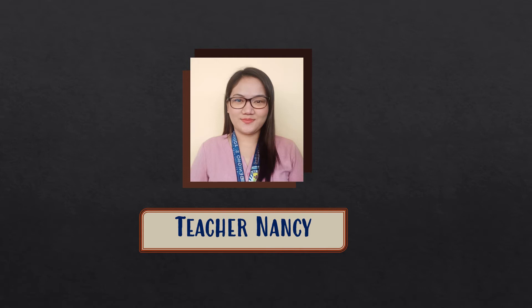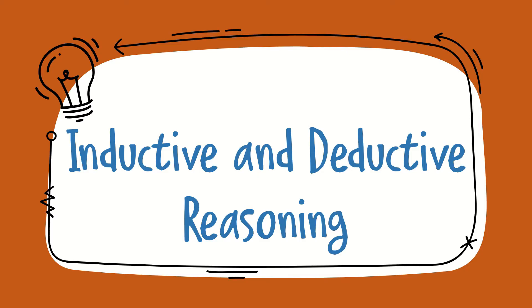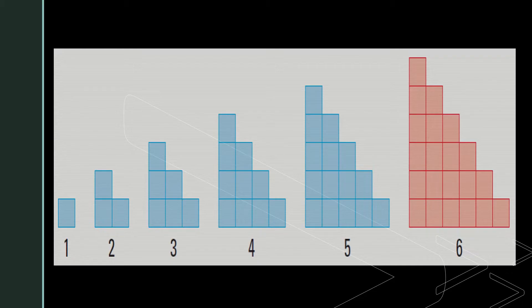Please be reminded that you may comment or ask questions at the comment section below. For this week's lesson, we are expected to use inductive or deductive reasoning in an argument and write a proof, both direct and indirect. There are two important terminologies we need to discover in this lesson: inductive reasoning and deductive reasoning. Let us first unlock inductive reasoning.